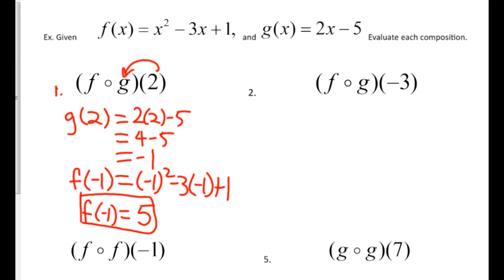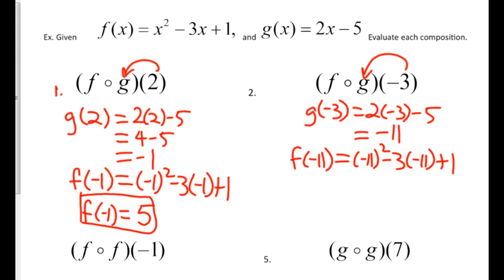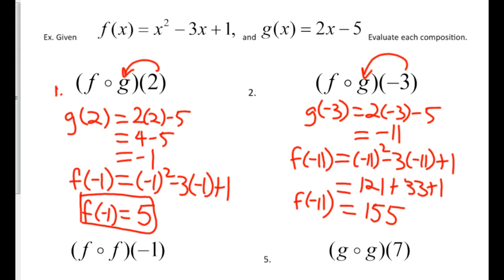Taking a look at the next one: I'm going to take negative 3 and plug it into the G equation. G at negative 3 equals 2 times negative 3 minus 5, so that would be negative 11. Plugging negative 11 into the F equation: negative 11 squared minus 3 times negative 11 plus 1. Doing all the math, I get 121 plus 33 plus 1 more is 155. So F at negative 11 is 155.